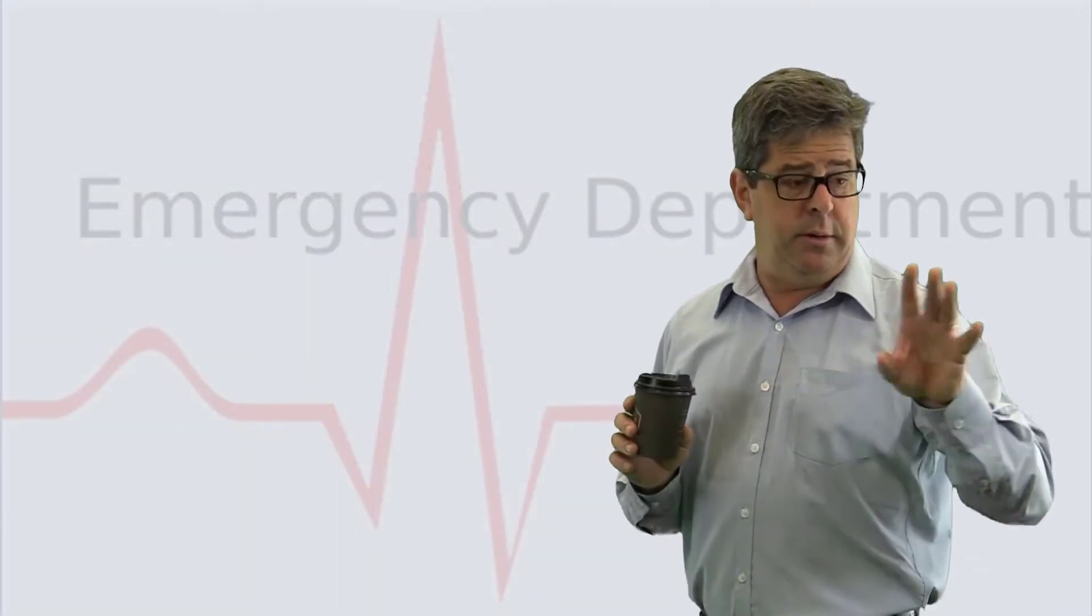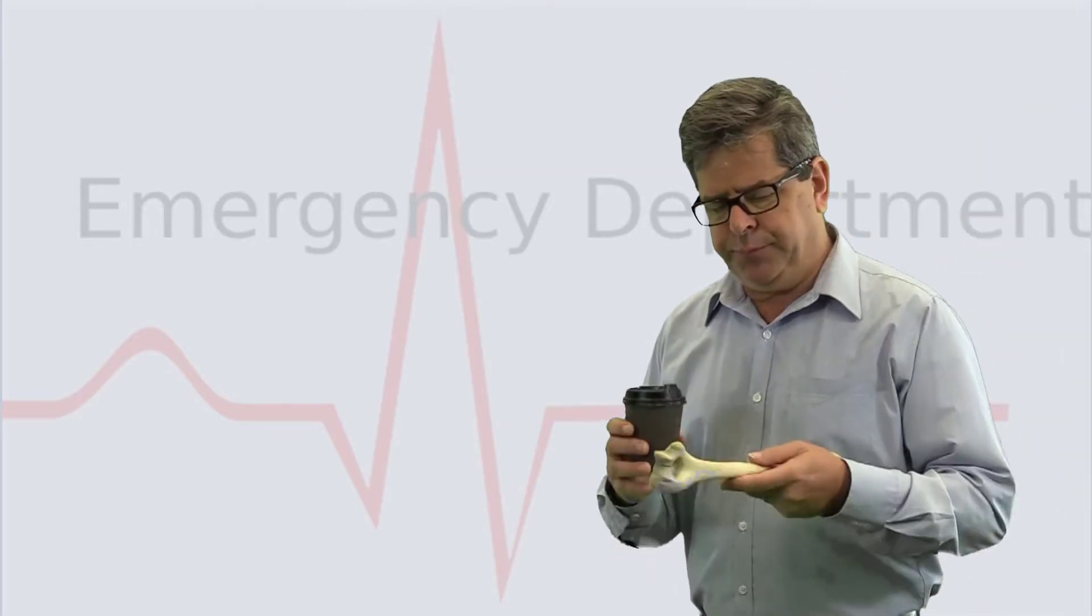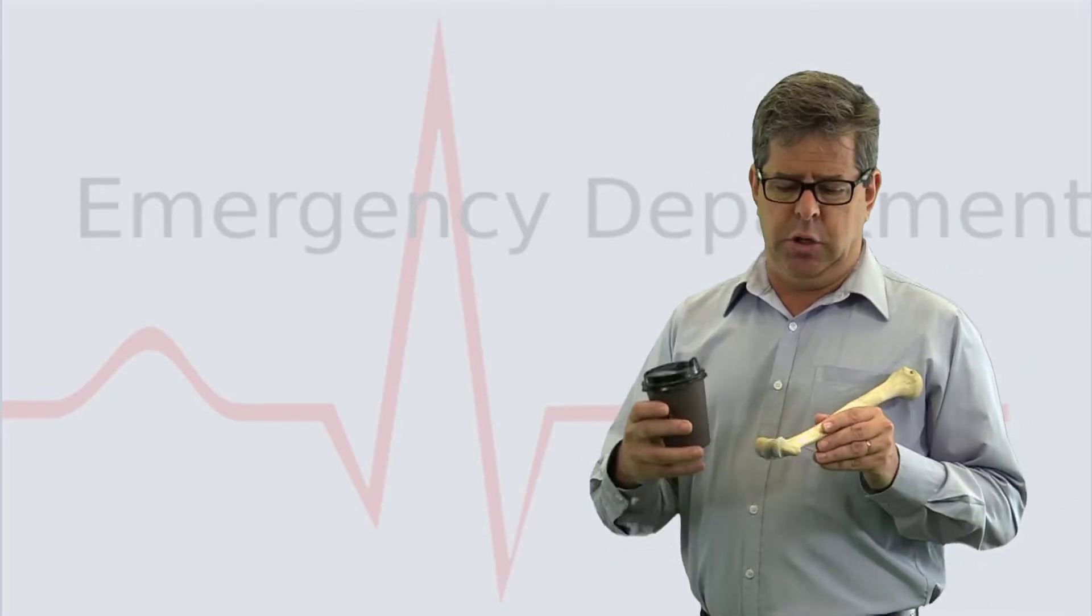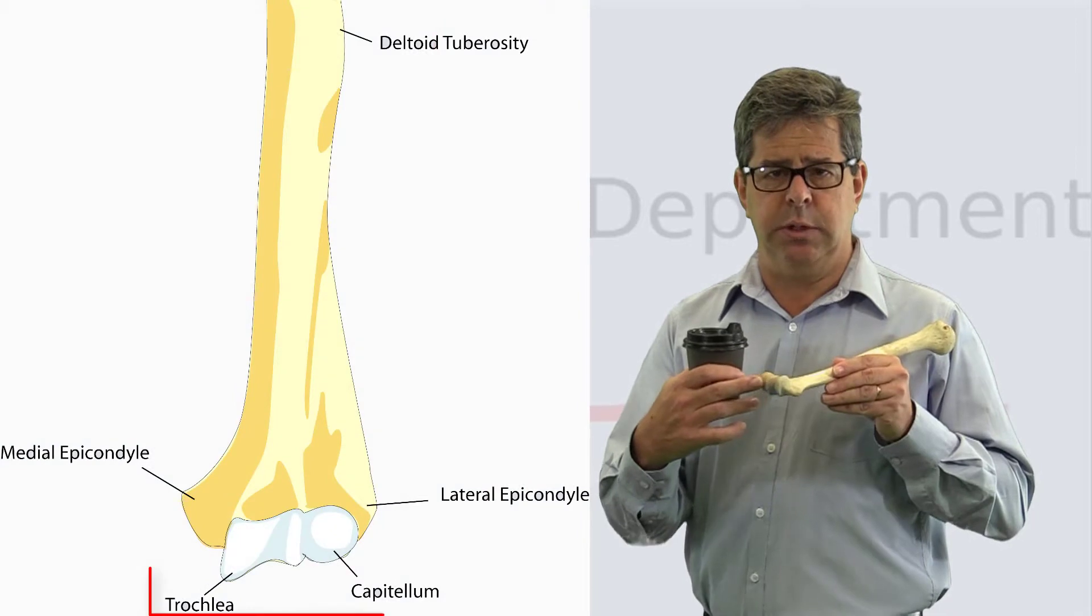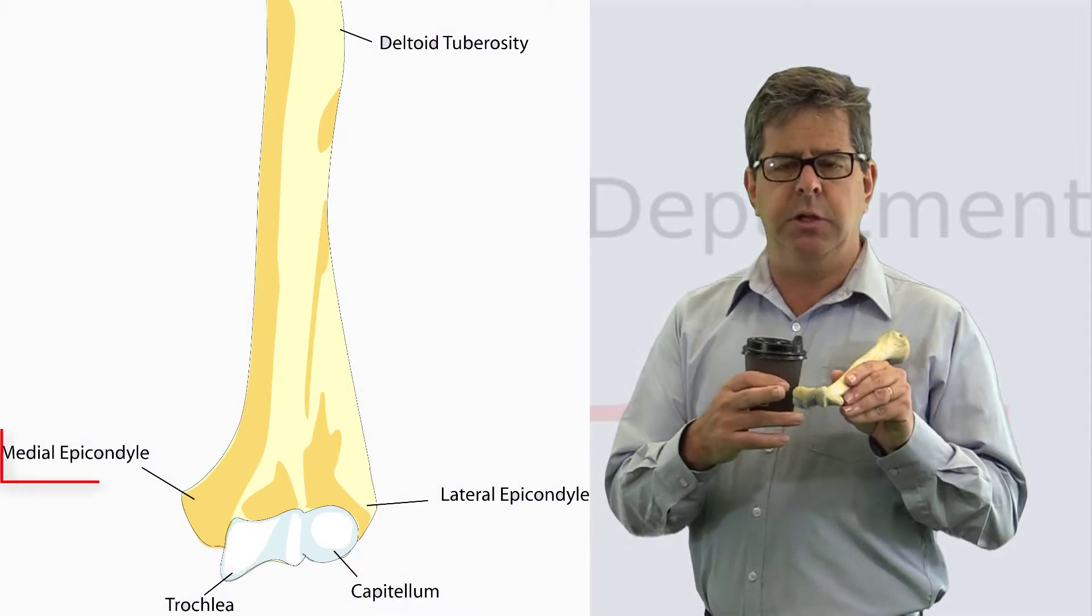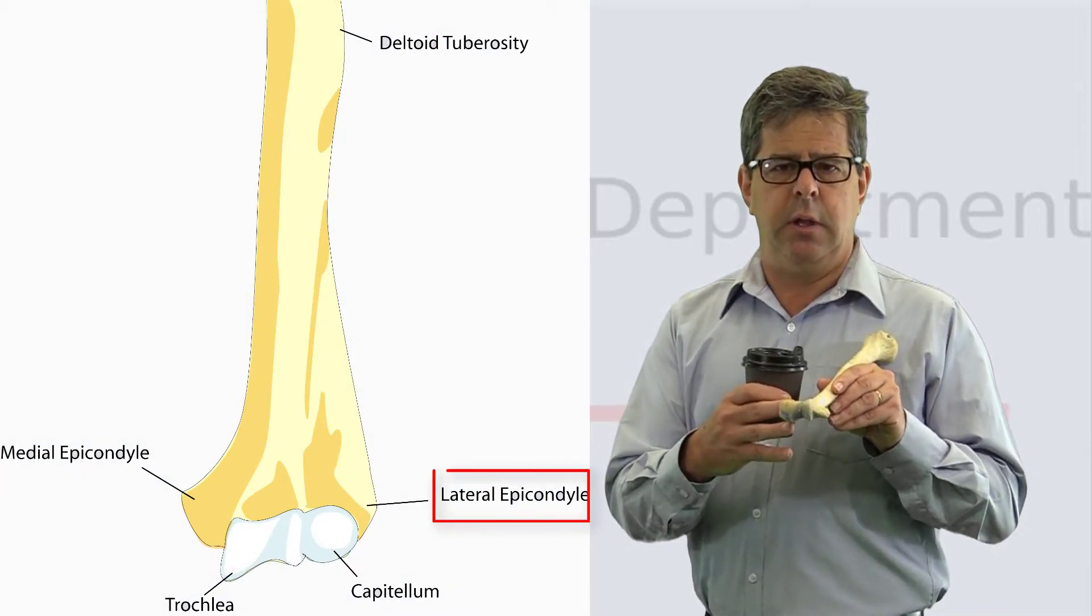The supracondylar area is here - these are the condyles, the medial and lateral epicondyle, and then proximal to that is the supracondylar region.